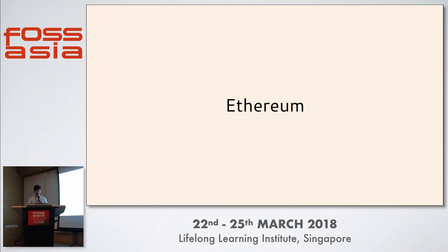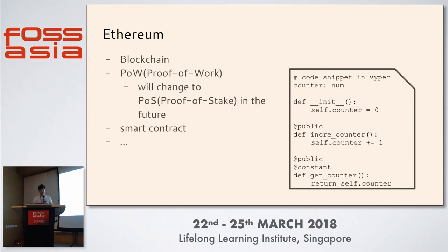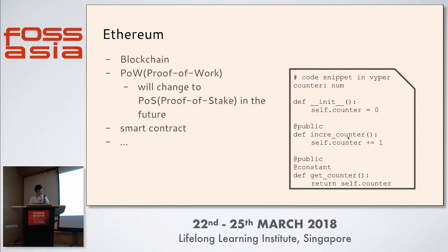Let's talk about Ethereum. Ethereum has its own blockchain and currently uses POW, with plans to change to POS in the future — this is known as Casper, which is still in testnet testing. Another key feature of Ethereum is it has smart contracts. The code snippet shown is in Viper: a basic contract that maintains a counter, with a method to increment the counter and a method to get the counter's value.